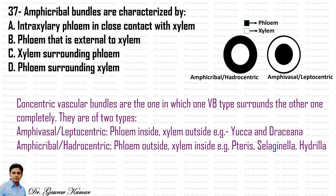In the amphivasal or leptocentric type, the phloem is inside and xylem is outside; examples are Yucca and Dracaena. In the amphicribal or hadrocentric type, the phloem is outside and xylem is inside; examples are ferns, Selaginella, and Hydrilla. So the answer is that amphicribal bundles are characterized by phloem surrounding xylem.